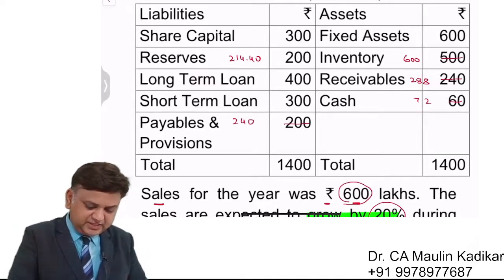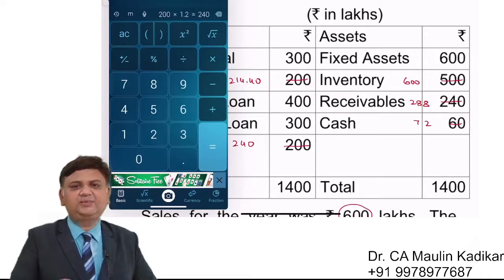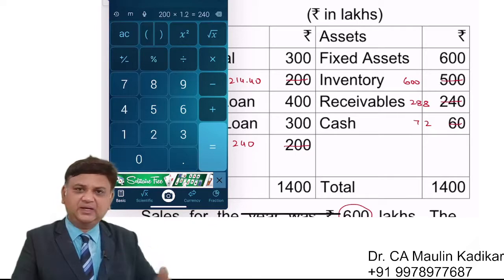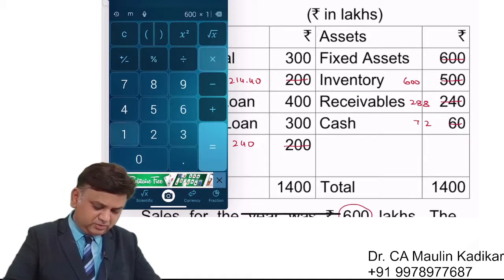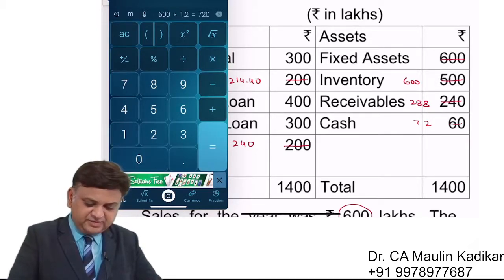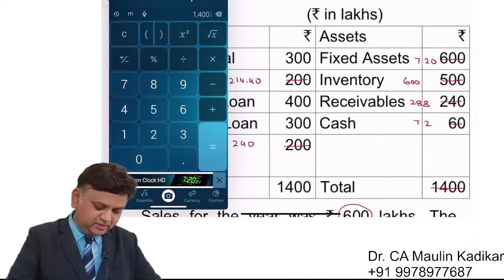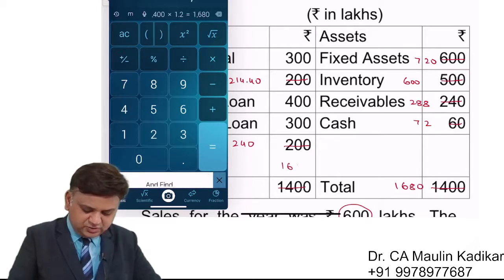So this is our tentative balance sheet after scaling, and one small assumption we need to make: the company is working at 100% capacity. So if we want to expand the business, we assume fixed assets must also be increased — existing fixed assets will not be sufficient. So 600 lakhs into 1.2 gives 720 lakhs. Total assets become 1400 into 1.2, that is 1680 lakhs. Total liabilities also become 1680 lakhs.